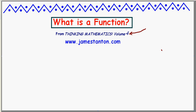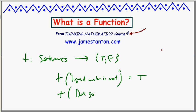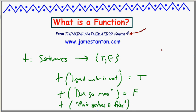As another example to show that things can be just crazy, let's do the truth function T. It goes from the set of all sentences to the set {T, F}, and the rule is: assign to each sentence the letter T if the sentence is true, the letter F if the sentence is false. For example, T of 'liquid water is wet' would be true, and T of 'ducks go moo' would be false. Whereas T of 'this sentence is false' is one of these classic paradoxes, and I have no idea what to assign to that.